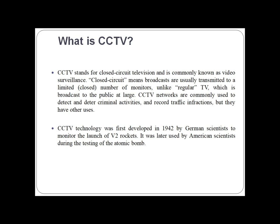CCTV networks are commonly used to detect criminal activities and record traffic infractions, but they have other uses as well. CCTV technology was first developed in 1942 by German scientists to monitor the launch of V2 rockets. It was later used by American scientists during the testing of the atomic bomb.